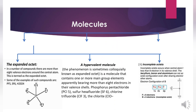A molecule is an element in the simplest form that exists in nature. The molecular structure is explained by three theories: Lewis structures, VSEPR theory, and polar bonds. Regarding the expanded octet: in a number of compounds there are more than eight valence electrons around the central atom. This is termed the expanded octet. Examples of such compounds are PF5, SF6, and sulfuric acid.